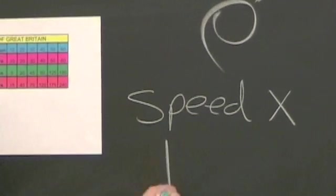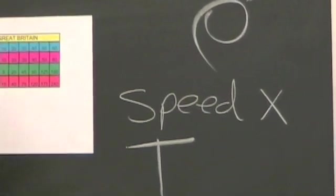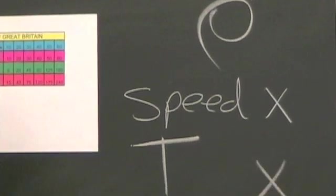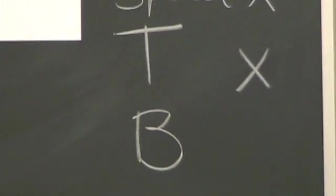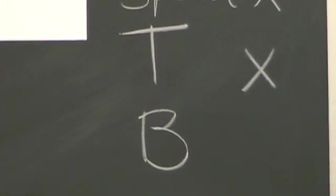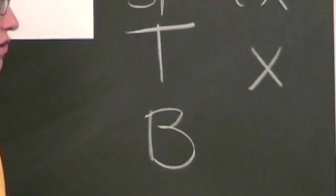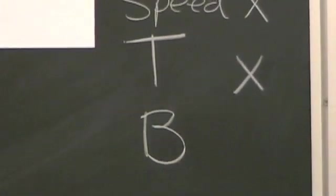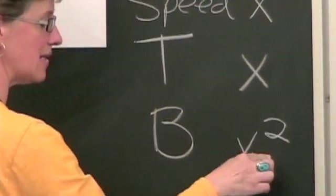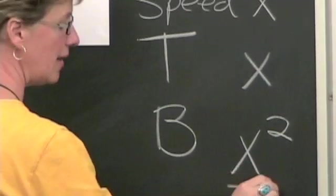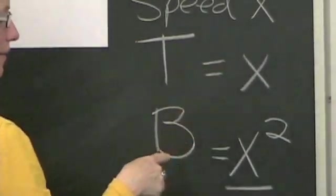And then t is going to stand for the thinking distance. And that is going to also be equal to x. And we're going to let capital B stand for the braking distance. And the braking distance will be equal to... Hold on, let me make sure I get it right. It's x squared divided by 20. So you take the thinking distance, square it, and you divide it by 20, and you will get the braking distance.